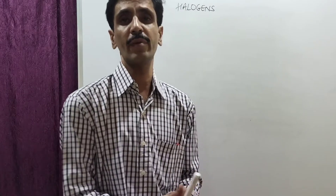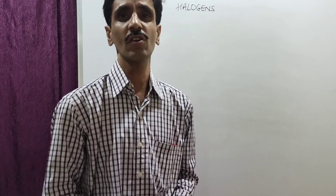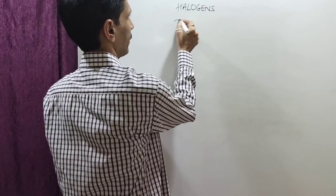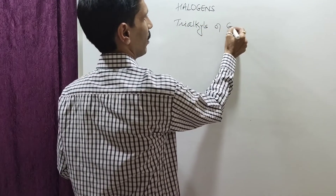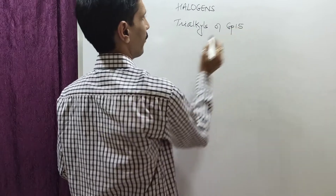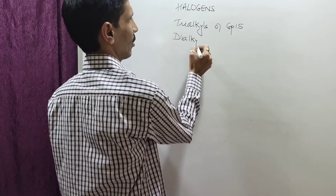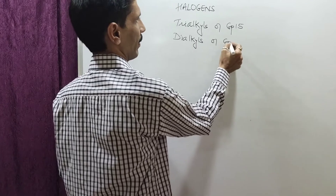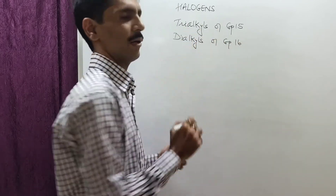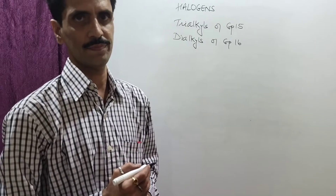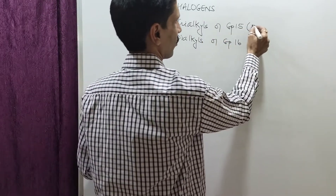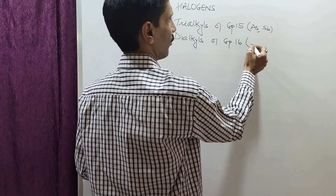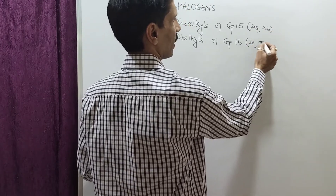We continue further with some other reactions of halogens with organometallic compounds. We are going to start with the trialkyles of group 15 and the dialkyls of group 16. As I mentioned when I was talking about reactions with oxygen: for group 15 I talk about elements like arsenic and antimony, and for group 16 I talk about selenium and tellurium.